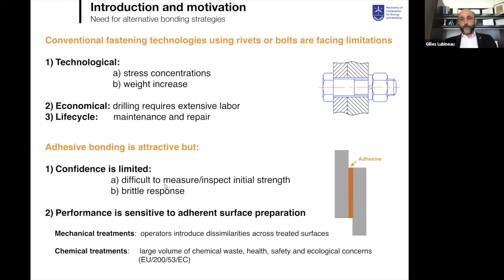The problem today is that it's quite difficult to measure the performance and initial strength of an adhesive joint, and it can give a quite brittle response. This means it works very well until it doesn't work at all — breaking suddenly in a brittle fashion. This performance is sensitive to surface preparation. Current mechanical treatments introduce variability, chemical treatments raise health and safety concerns, so there is clearly a need for new ways of preparing the substrate for secondary bonding.